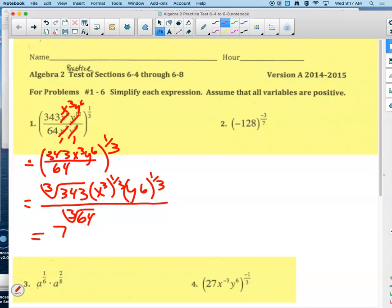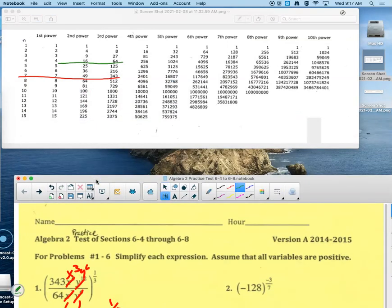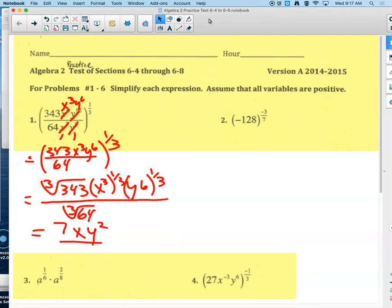So we grab our power chart because we haven't worked with cubed root of 343 a whole lot. We'd say cubed root of 343, that's right up there. That's a 7. And then power to a power, what are we supposed to do with these exponents? When you raise a power to a power, what do you do? You do multiply. So three times a third is one. So that'll be x to the first. Six times a third is two. So y squared. And then the cubed root of 64 is four.